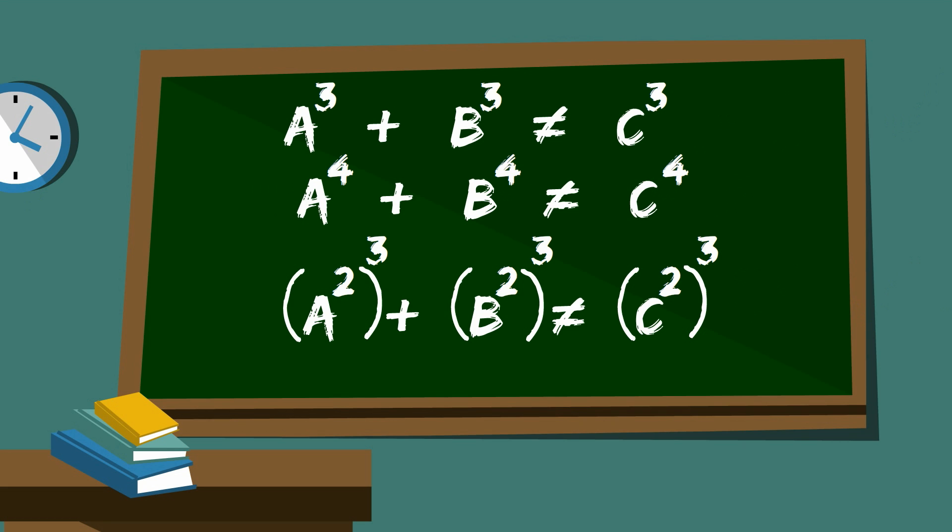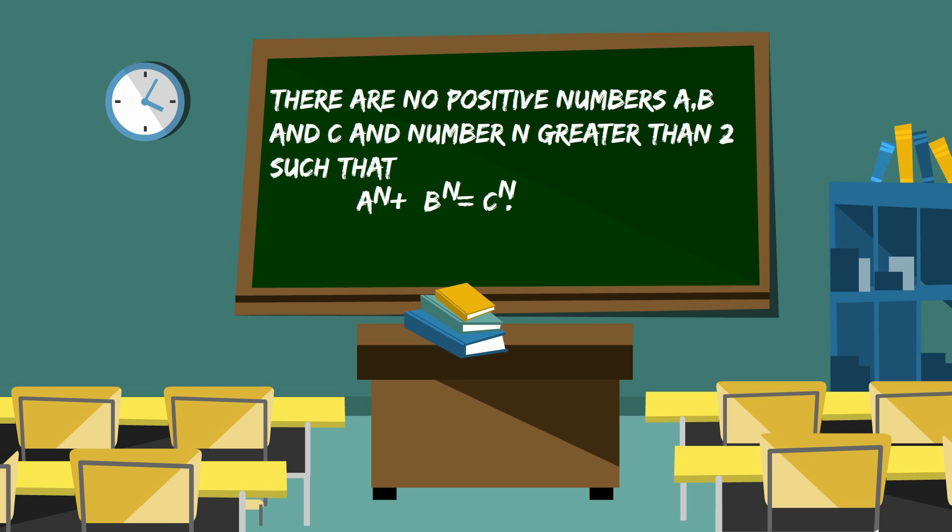And that one before we saw, a to the hundredth plus b to the hundredth, well, that can't be true because a hundredth is itself a fourth power. So, if you follow that all through, it tells us that we really only need to look at the prime powers, not every power. So, if we go back to our original problem, it would suffice to just change this number n to a prime p.